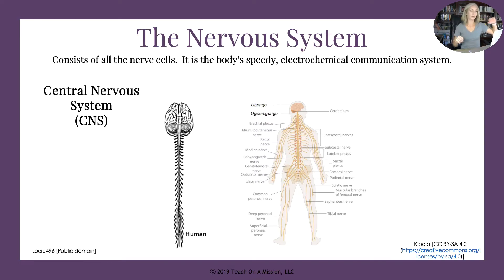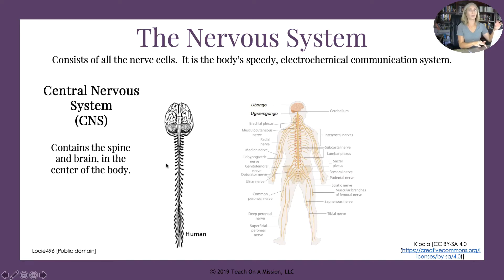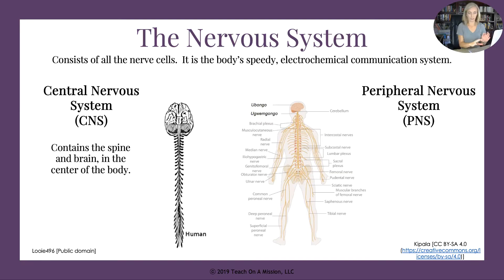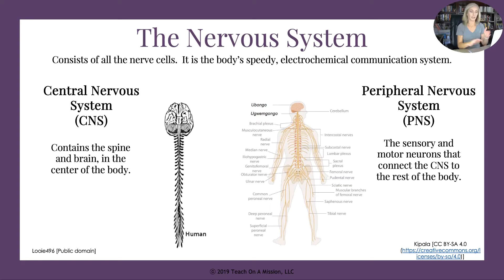Within our whole-body nervous system we have two subdivisions. The central nervous system consists of the spine and the brain — those are the only two things in the CNS. A good way to remember that is it's in the center of your body. Then we have the peripheral nervous system — think of your peripheral vision, off to the sides. It's everything else: the sensory and motor neurons that connect the CNS to the rest of the body and vice versa.